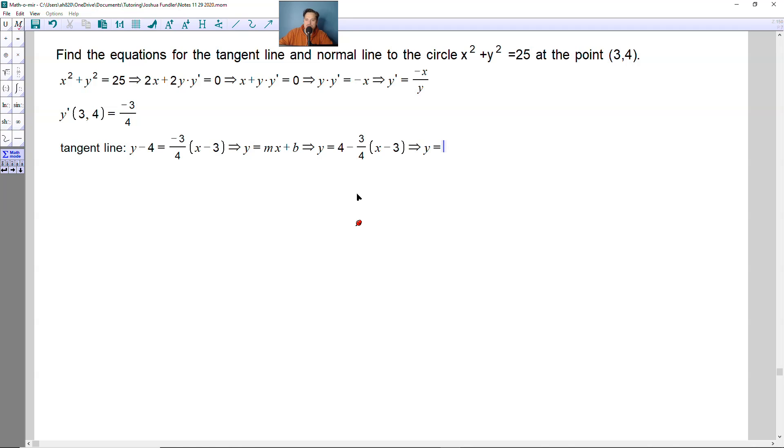Continuing, it's going to be y equals 4 minus, distribute this negative 3 fourths to the x and the negative 3, so you get negative 3 fourths x. Then you have to be really careful because negative 3 fourths times negative 3 is going to be positive 9 fourths.